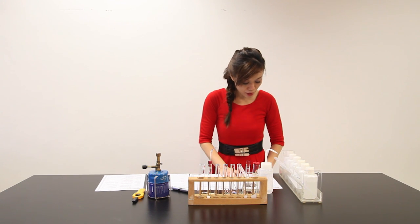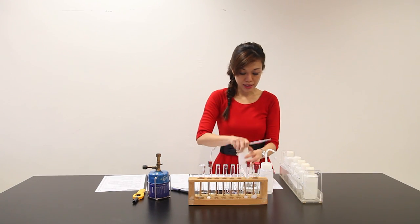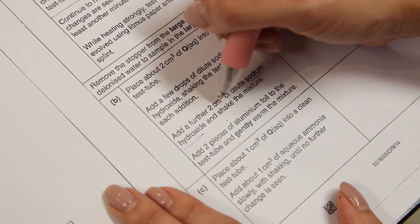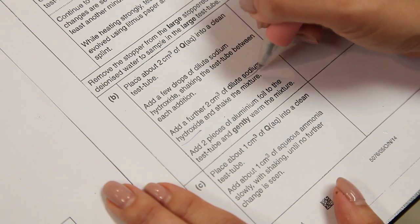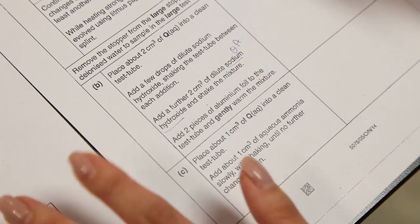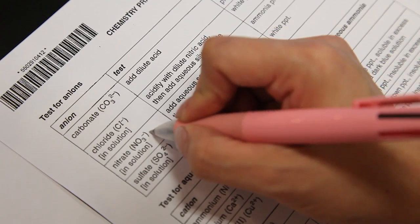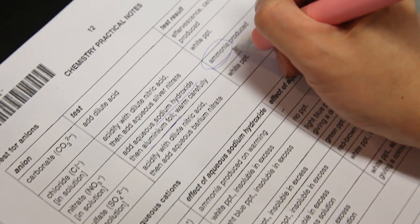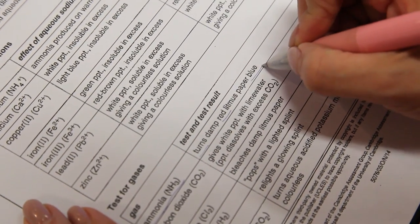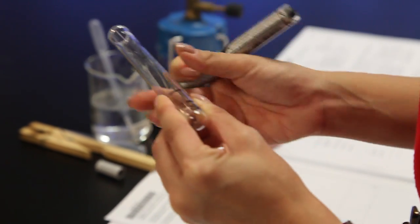Add a few drops of dilute sodium hydroxide, shaking the test tube between each addition. Sodium hydroxide is here. Let me open this up. When 2 cm³ of sodium hydroxide is added, followed by 2 pieces of aluminum foil. Usually when sodium hydroxide is added, we have to refer to the QA notes. Sodium hydroxide together with foil, you're actually testing for nitrate. A gas ammonia will be evolved. Ammonia will turn damp red litmus paper blue. And another 2 cm³ of NaOH.